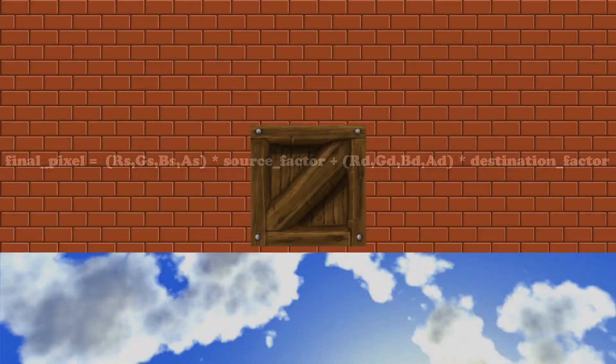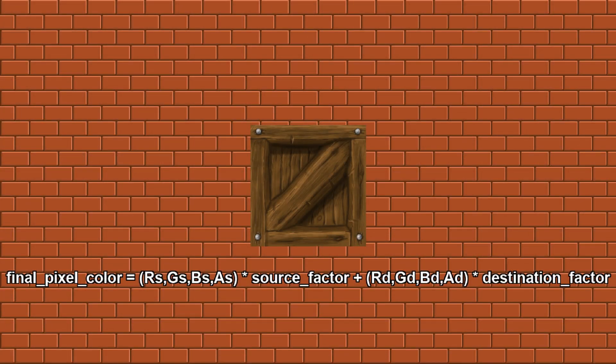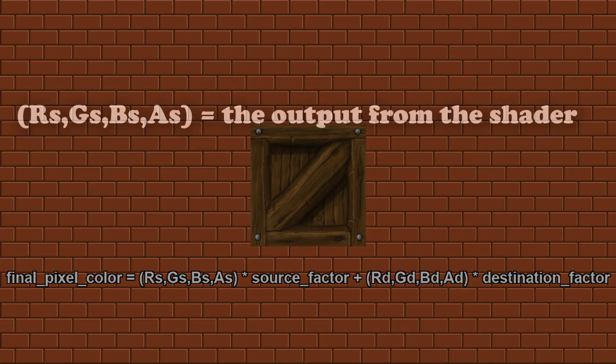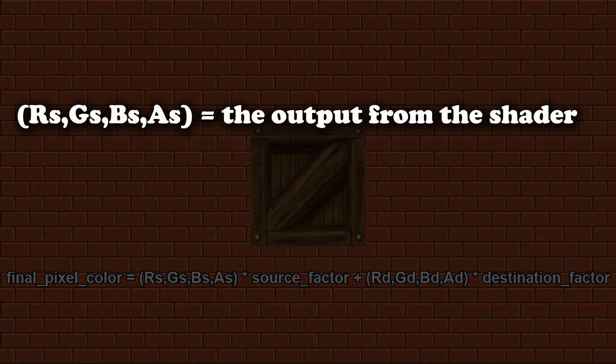So let's analyze this equation a bit. The first part — R, S, G, S, B, S, A, S — is the color and alpha values of the pixel you're trying to draw. This is basically the output that comes directly from the shader. So this means that the blending is performed after the shader has done its part. This color is called the source and is represented in the demo on screen by the crate.